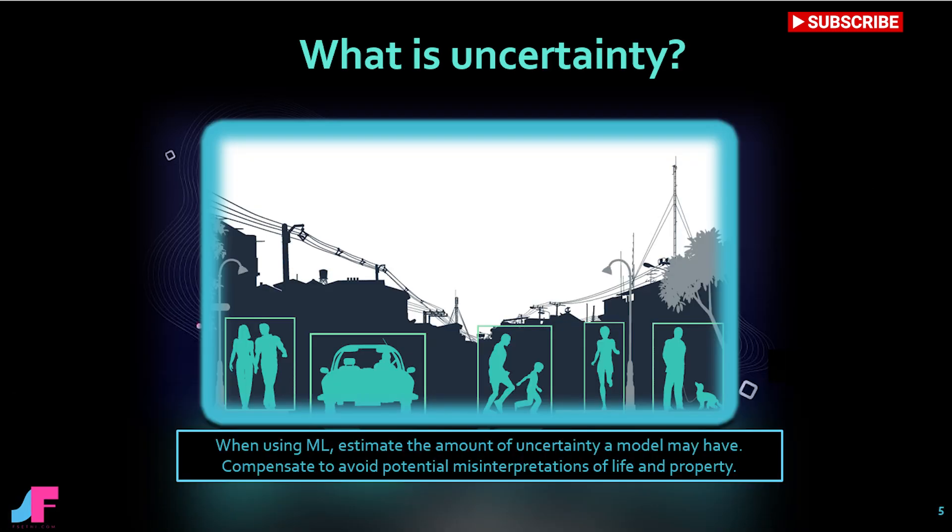What is uncertainty? Uncertainty describes an imperfect outcome. In the context of machine learning, uncertainty arises from using models. These models attempt to fit training data which may have imperfect data. The best data may also be unknowable.